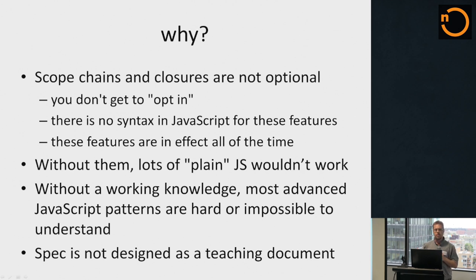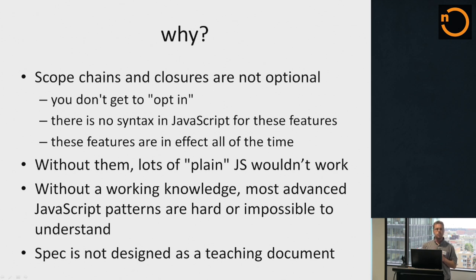One more plug for why this stuff is important: scope chains and closures are not optional in JavaScript. There's no syntax for this, there's no keyword that you type, there's no special feature that you turn on. You don't get to opt in or opt out. These are things that apply to your programs all the time, every single time that you write a function. Without them, a lot of plain old JavaScript wouldn't work at all.